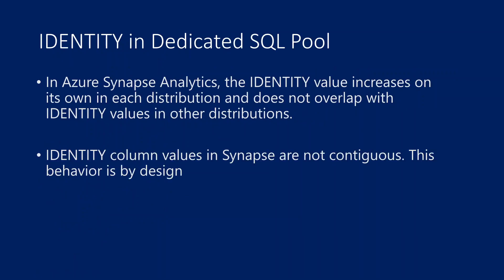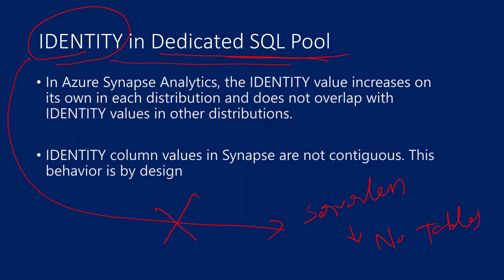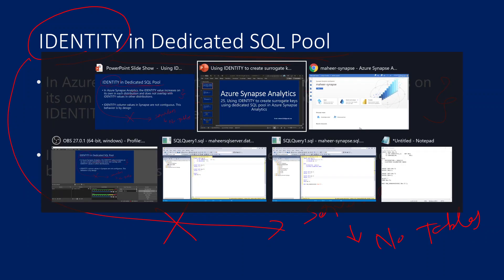Let's understand the identity behavior in the dedicated SQL pool. Identity columns can be created on tables, and tables are only available in the dedicated SQL pool in Synapse. Serverless SQL pool has no tables, so identity is not supported there. Also, in Azure Synapse Analytics, identity column values increase based upon the distributions — I will practically explain this and you will understand.